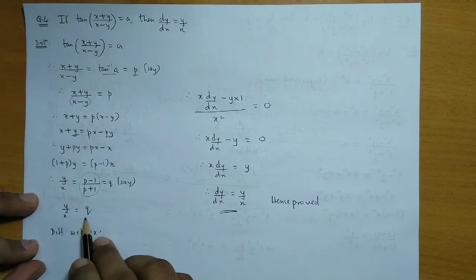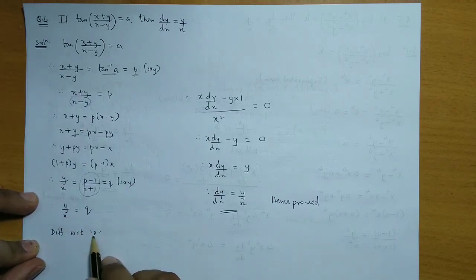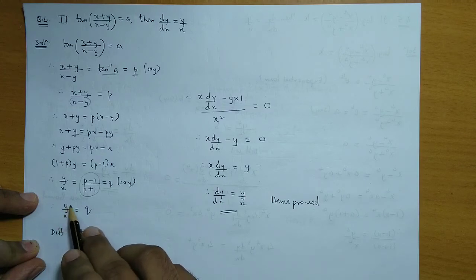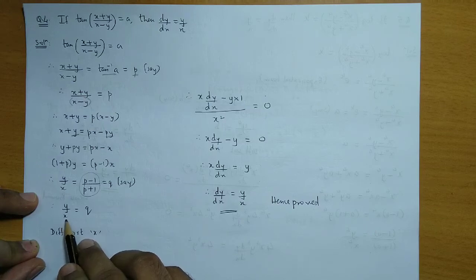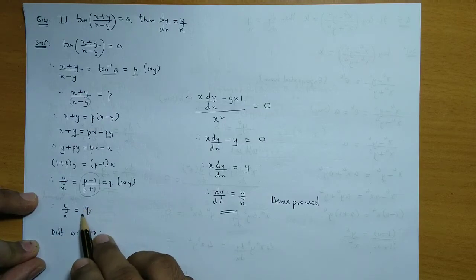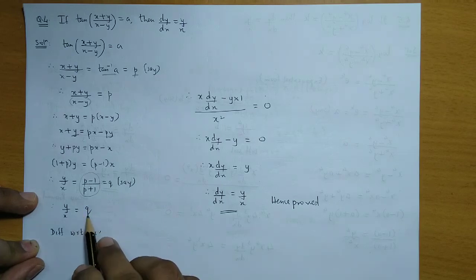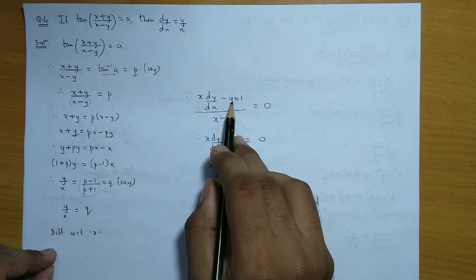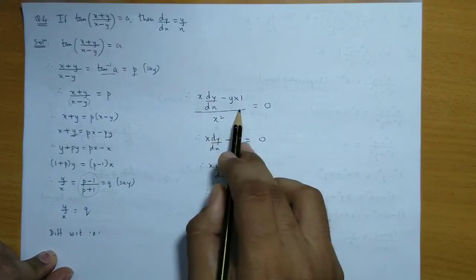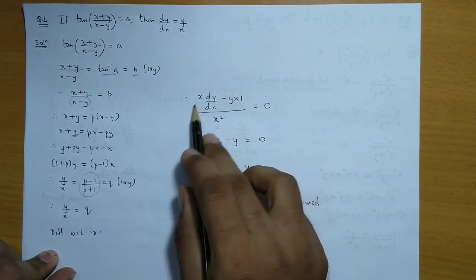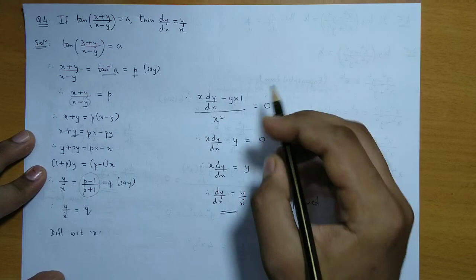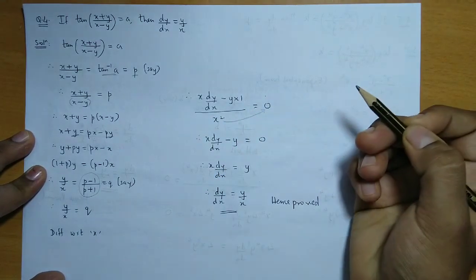Now we differentiate both sides with respect to x. On the left hand side we use the u/v (quotient) rule. The u/v rule gives: v times derivative of u minus u times derivative of v, all divided by v square. On the right hand side, q is a constant, so its derivative is 0. Applying this, we get: x times dy/dx minus y times 1, divided by x square, equal to 0.